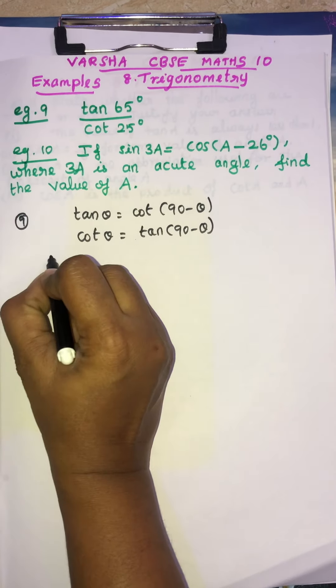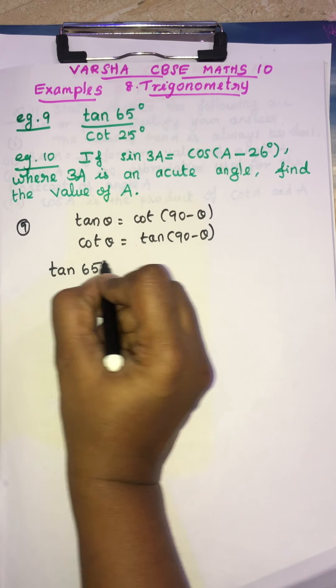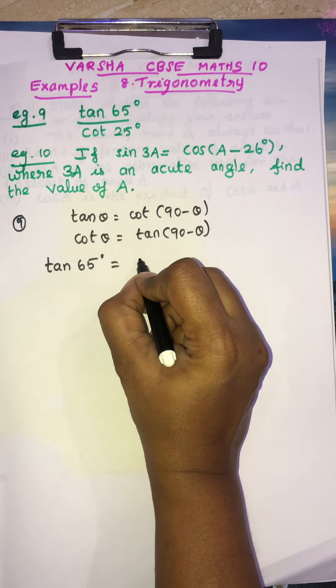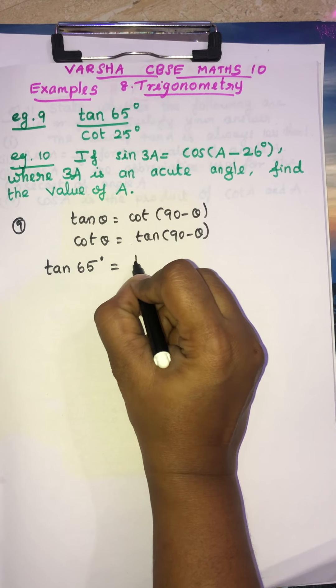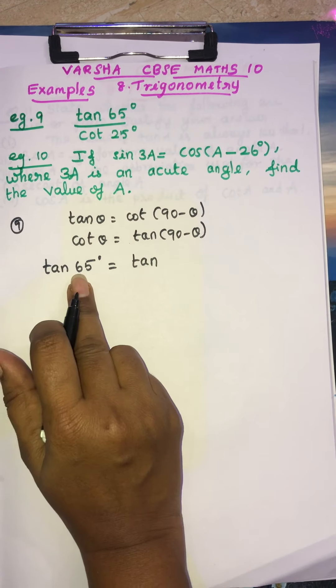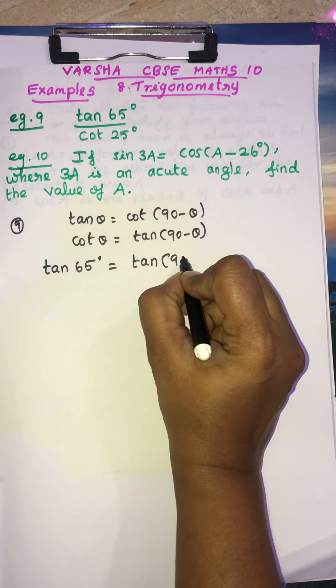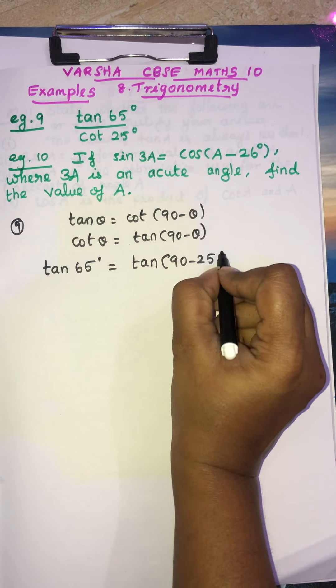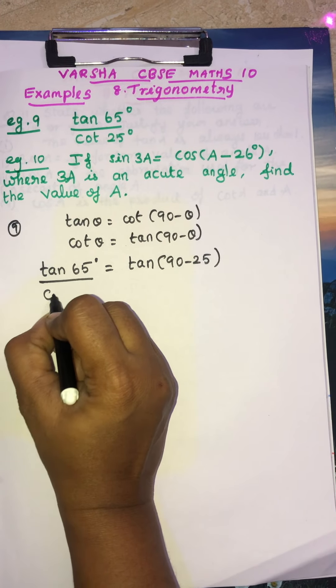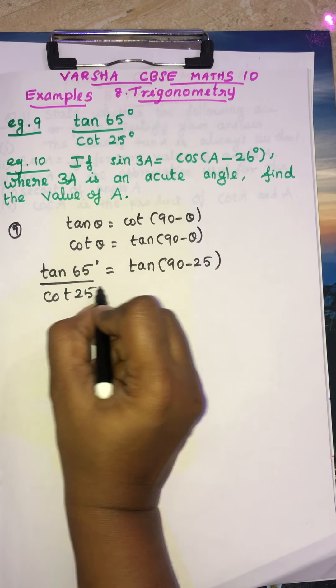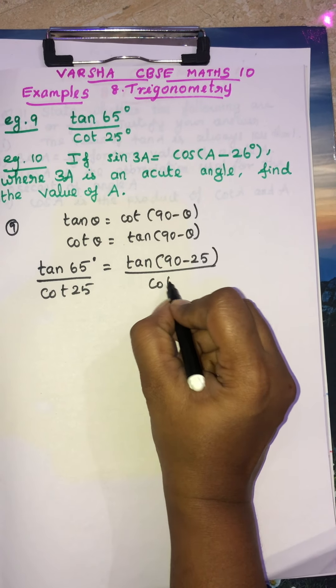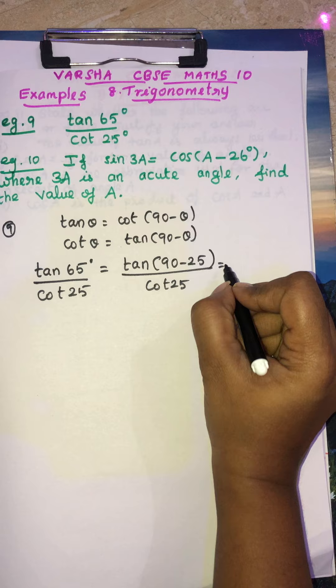See what is that? Tan 65. So how will you write students? Tan theta. 65 degree can be written as 90 minus 25. By cot 25. This is cot 25.